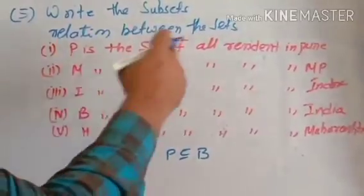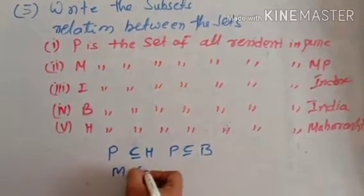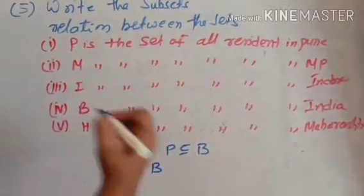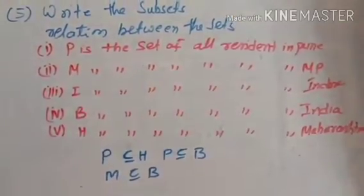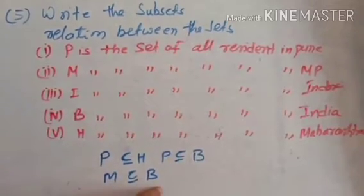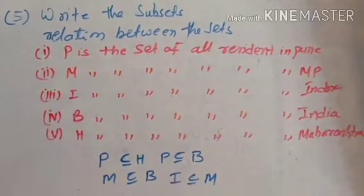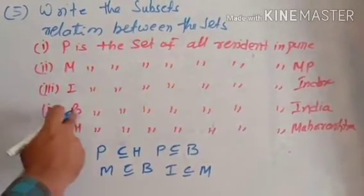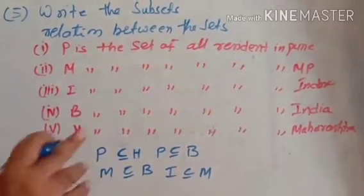M is all the residents in Madhya Pradesh. Madhya Pradesh is a state of India. Therefore M is a subset of B. I is the set of all residents in Indore. Indore is a city of Madhya Pradesh, and Madhya Pradesh is a state of India. So I is a subset of M. B is all the residents in India — India is the universal set, so it is not a subset of any other set.